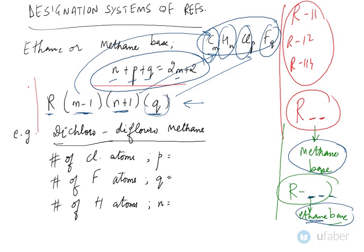This is the general rule by which we designate a system of refrigerants: R(M-1)(N+1)Q, where M is the number of carbon atoms, N is the number of hydrogen atoms, and Q is the number of fluorine atoms.